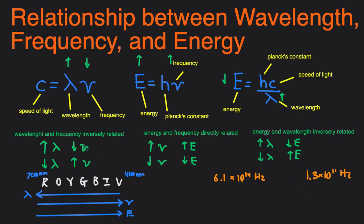Which of these lights will have a longer wavelength? Well, we know that wavelength and frequency are inversely related. Let's call light one A and light two B. Since A has a higher frequency, it must have a shorter wavelength, because frequency and wavelength are inversely related. So the wavelength of A is going to be shorter than the wavelength of B.